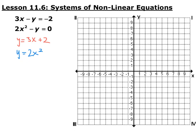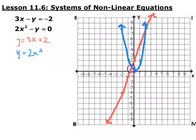Go ahead and pause the video and graph these two equations. So I graphed them: the line y equals 3x plus 2 has a y-intercept of 2 and a slope of 3, shown in red. In blue is the parabola with its vertex at the origin — instead of going up 1 over 1, it goes up 2 over 1. The solution is where they intersect, giving us two intersection points: one in the second quadrant and one in the first quadrant. Our two solutions are (2, 8) and (−1/2, 1/2).